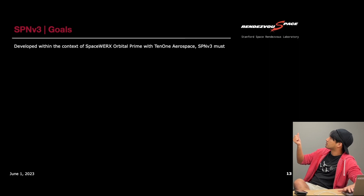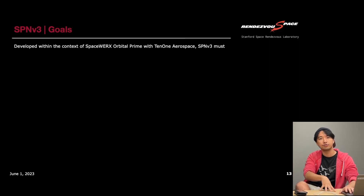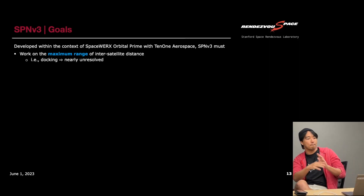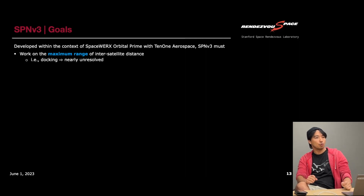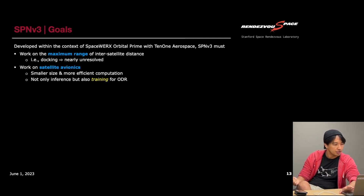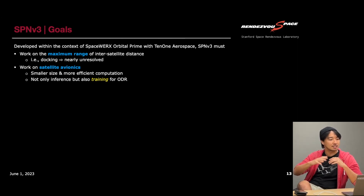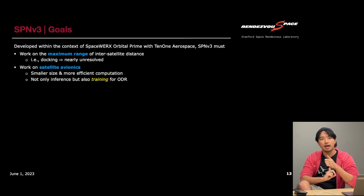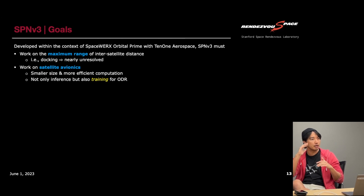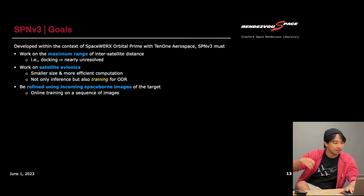SPMv3 is developed within the context of the SpaceWorks Orbital Prime program with Taiwan Aerospace. The goals are: first, it works across the maximal range of inter-satellite distance — as soon as the target satellite becomes somewhat resolved all the way to close range; second, it needs to run on satellite avionics, meaning it must be small and computation-efficient, constrained not only on inference but also on training for potential online neural network weight refinement using space images; third, it must support online training.